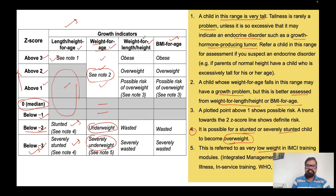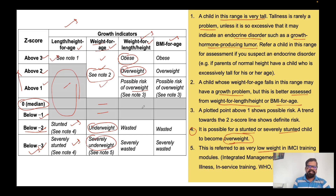For the third indicator, weight-for-height, we check whether weight is appropriate for the child's height. If the plotting falls above three, the child is obese. If it falls above two, it is overweight. If it falls above one, there is a possible risk of overweight. If it is zero or below minus one, not a problem. If weight-for-height is below minus two, it is wasting, and below minus three it is severely wasting.